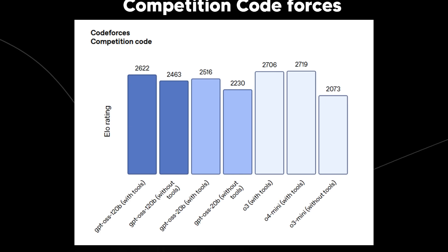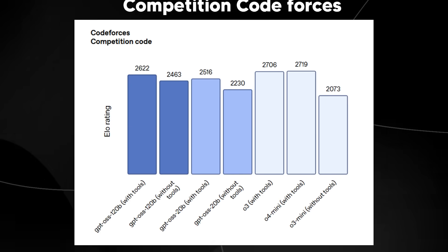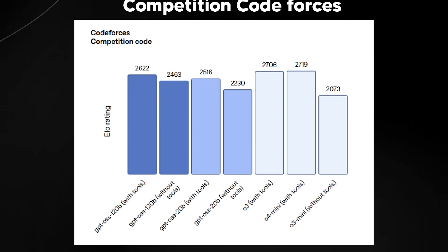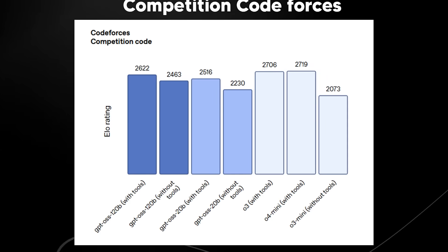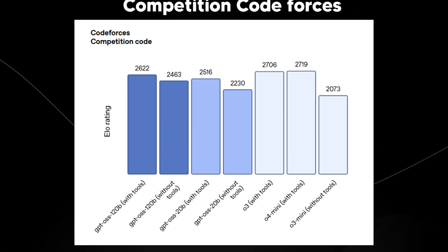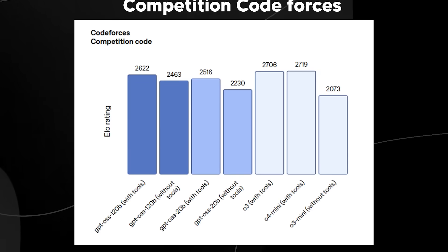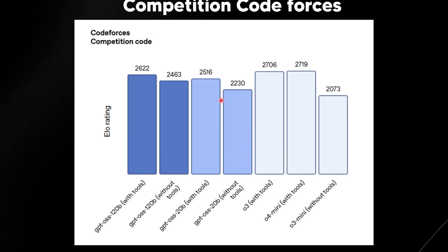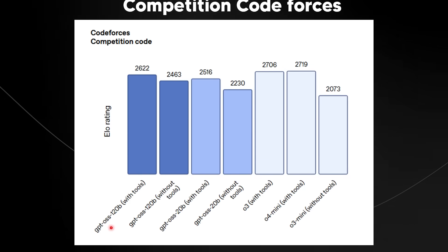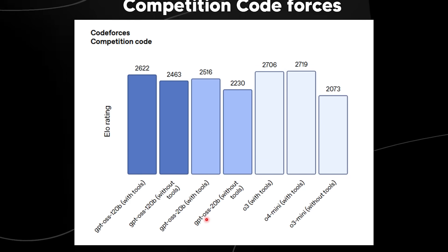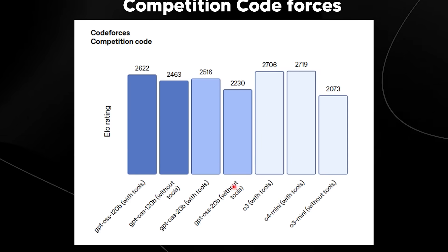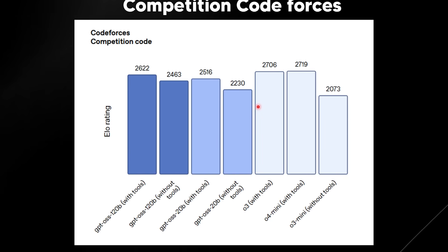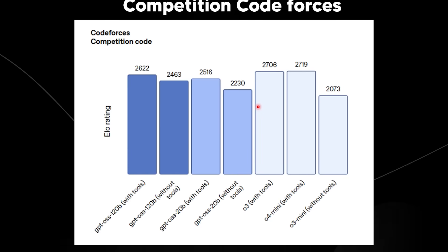I usually try not to focus on benchmarks too much, but this is the first time in maybe years that OpenAI has released something open source that has the community looking at exactly where models lie in terms of raw capability. The 120B model and even the 20B model still perform at the level of o3 mini and around o3, despite being so much smaller in size, which is truly remarkable.